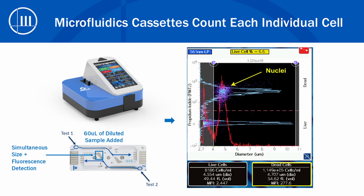All MOXIE use the coulter principle, which has long been considered the gold standard for cell sizing and counting. The critical piece that enables flow cytometry quality cell analysis data is our microfluidics cassette. MOXIE cassettes measure every individual cell as it flows through the detector, both for size and fluorescent markers.